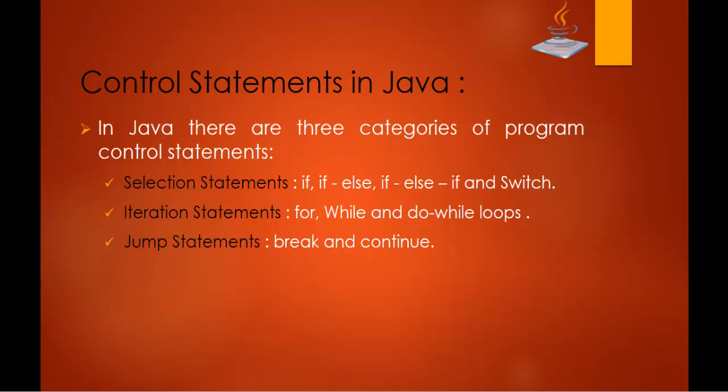In Java there are three categories of program control statements: selection statements, iteration statements, and jump statements. If, else-if, and switch statements come under selection statements. For iteration statements we have for, while, and do-while loops. For jump statements we have two keywords: break and continue.